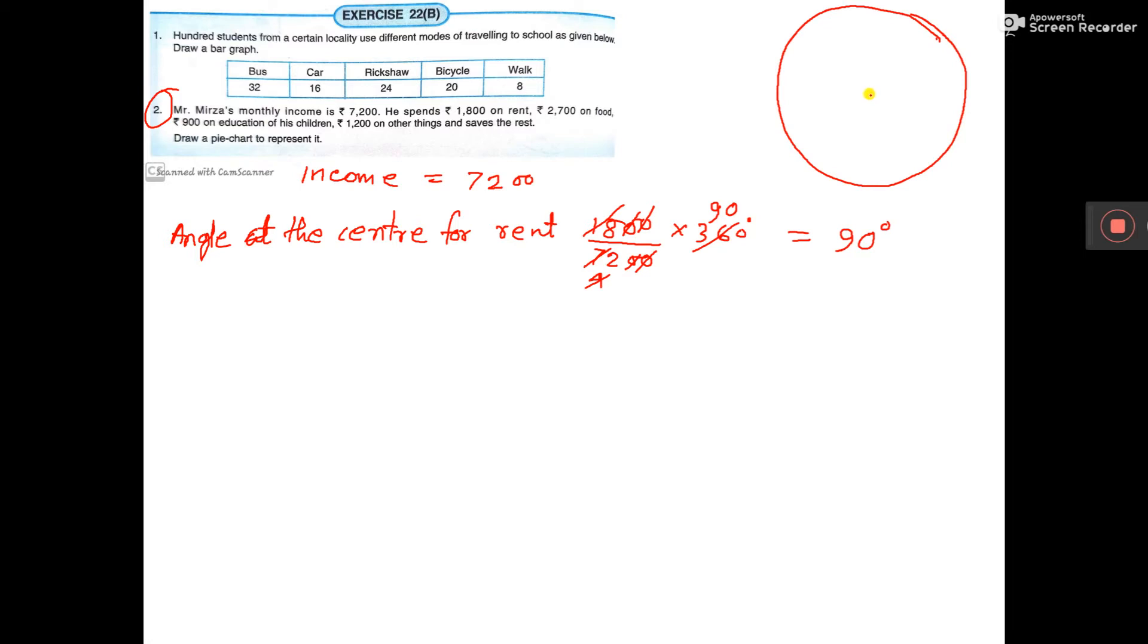So first you draw one line, then by your protractor on this line you draw a 90 degree angle.